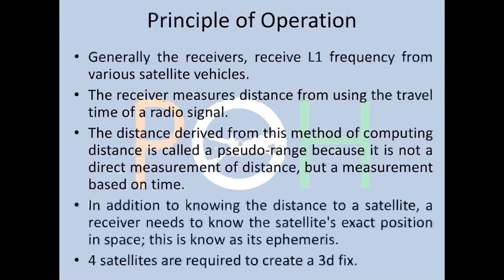The receivers receive the L1 frequency from various satellite vehicles. The receiver measures distance using the travel time of a radio signal. The distance derived from this method is called pseudo range, because it is not a direct measurement of distance but a measurement based on time. In addition to knowing the distance to a satellite, a receiver needs to know the satellite's exact position in space — this is known as its ephemeris. Four satellites are required to create a 3D fix.